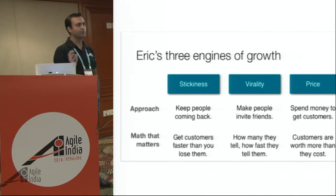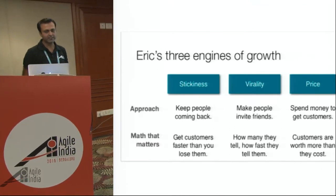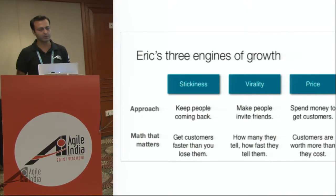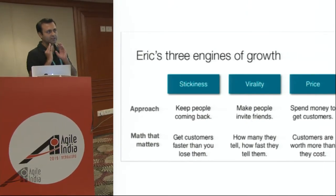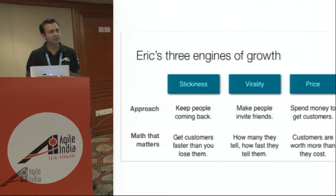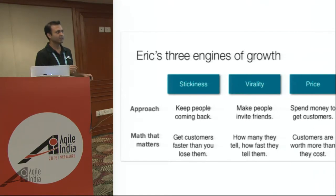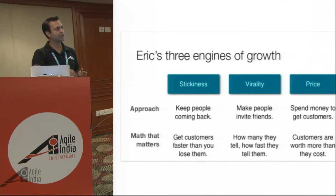This is Eric Ries's Lean Startup book's three engines of growth. One is a stickiness engine, the other is a virality engine, and then obviously the price engine. In the stickiness engine, the key metric you have to figure out is churn — you have to acquire customers at a higher pace than you're losing them. That means some customers are still sticky and if you keep doing more, you're going to stay longer in the business.